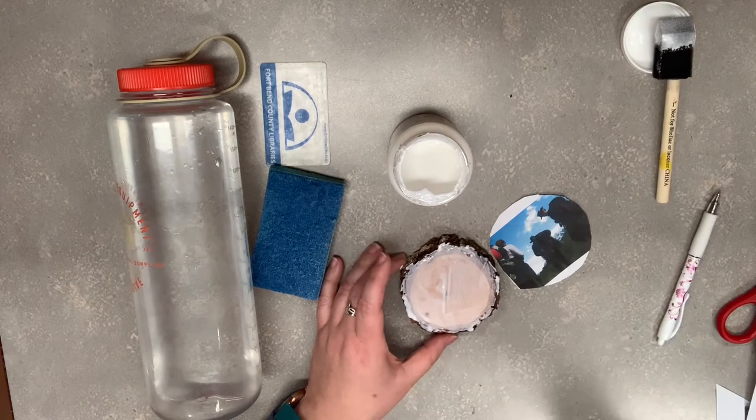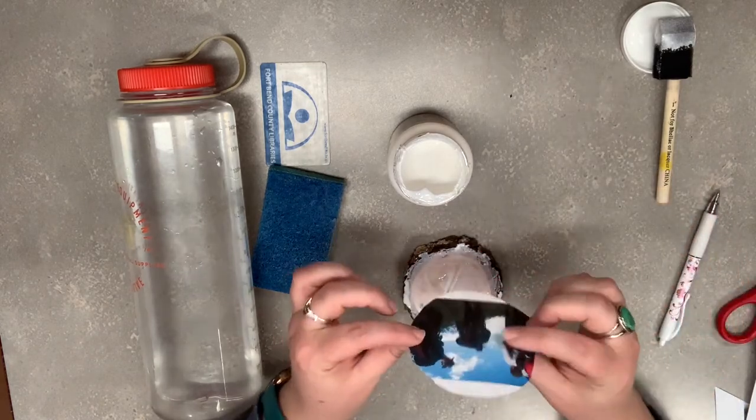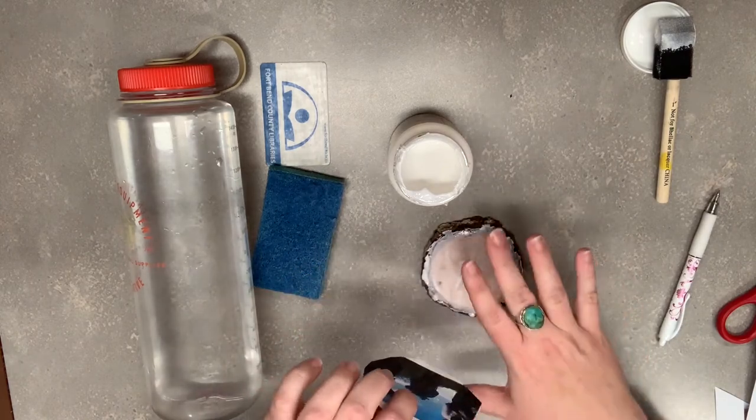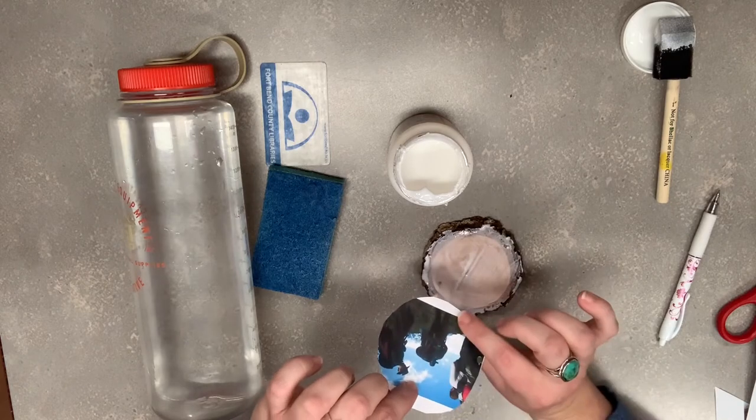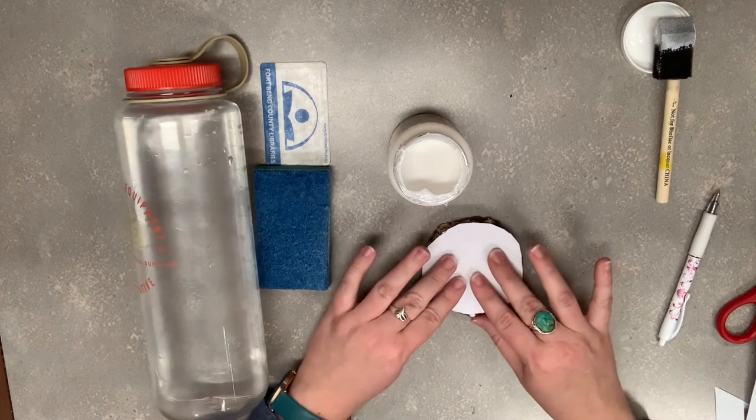Okay, so now that I have the glue on my wood slice, I'm going to take my image and place it on there. But this is an important part here. You want to make sure that you place your image printed side down onto the surface of the wood, because this is the side that has the ink.